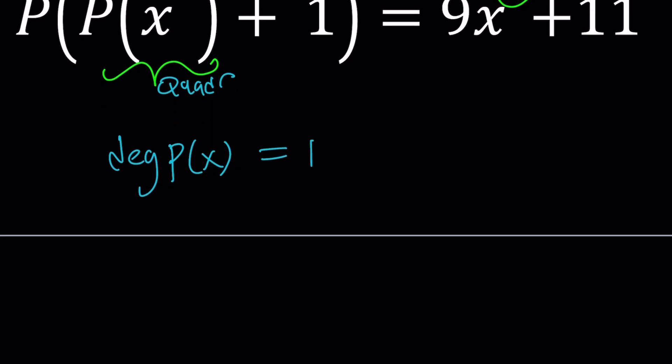So P of x can be written as ax plus b. What is P of x squared? You have to replace x with x squared, so it's going to be a x squared plus b.